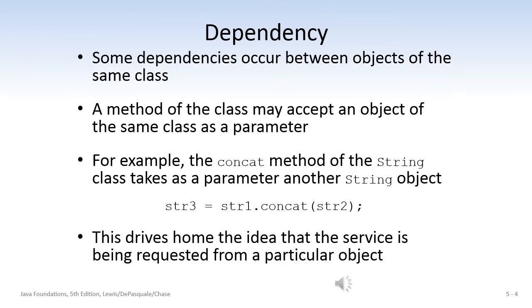Some dependencies may occur between objects of the same class. For example, a method of a specific class may accept an object of the same class as a parameter. Probably the most obvious example is the concat method, which concatenates two strings. It's a method of the string class, and it takes as a parameter another string object. So here's a dependency between objects of the same class, and it drives home the idea that the service is being requested from a particular object.